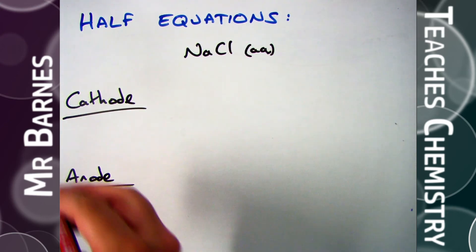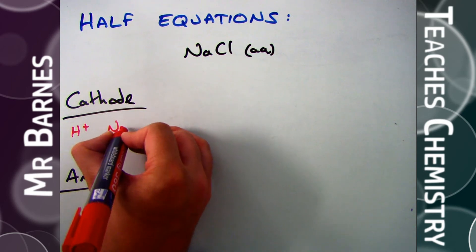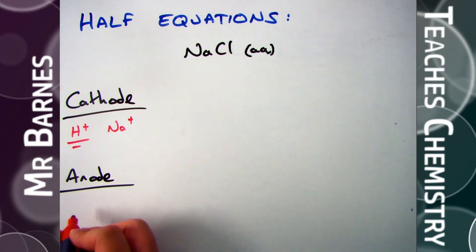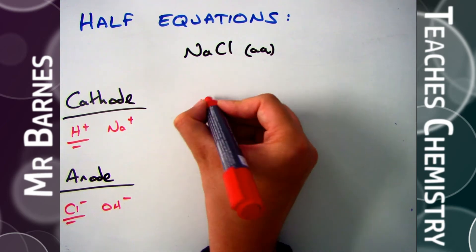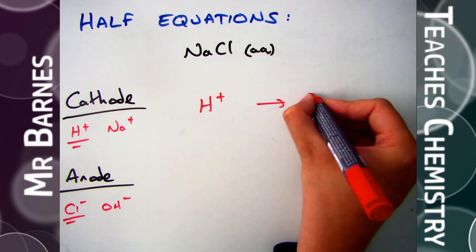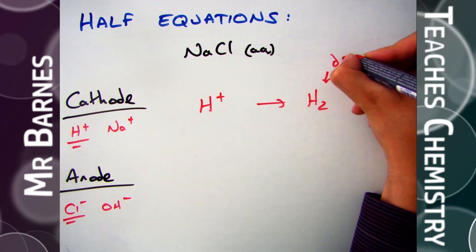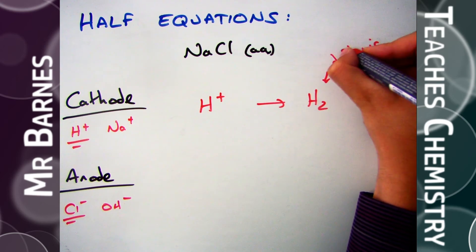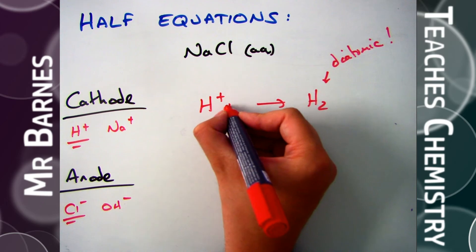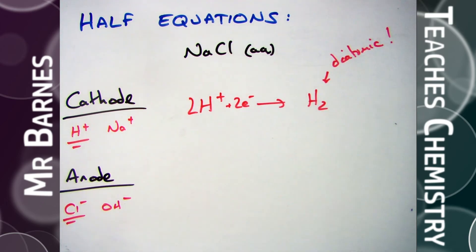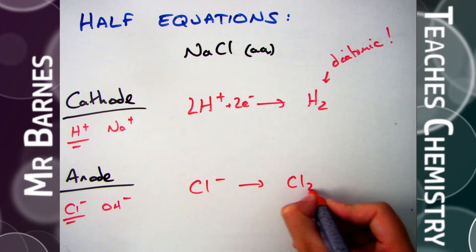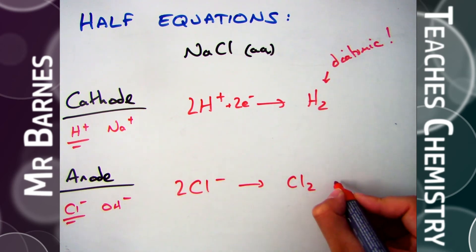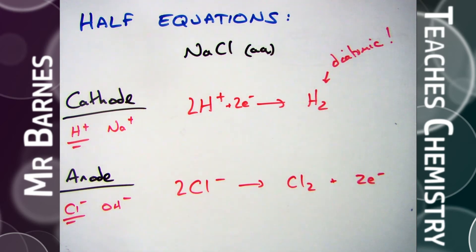Looking at sodium chloride solution: at the cathode it's either H⁺ or Na⁺. Sodium is in group one so it's reactive, therefore hydrogen is formed. At the anode there's a halide, so chlorine is formed. Starting with H⁺ going to hydrogen — hydrogen is diatomic. Balancing: 2H⁺ + 2e⁻ → H₂. At the anode, starting with Cl⁻ going to Cl₂ and taking an electron away. With two chlorines on the right, I need two Cl⁻ on the left and two electrons: 2Cl⁻ → Cl₂ + 2e⁻.